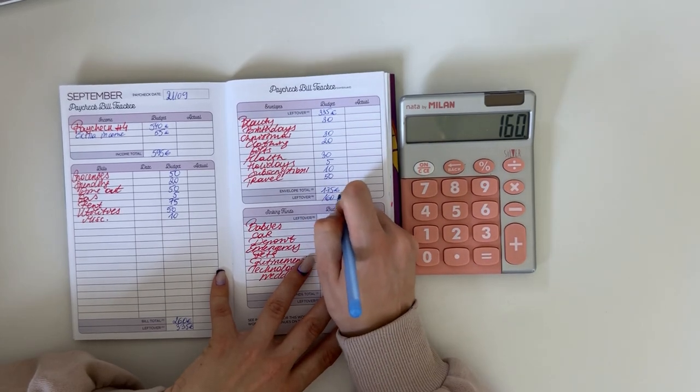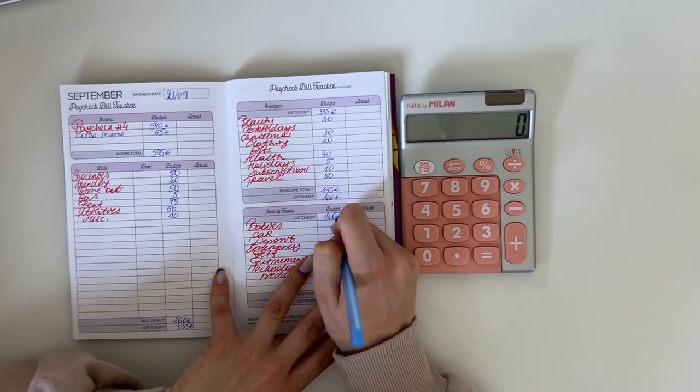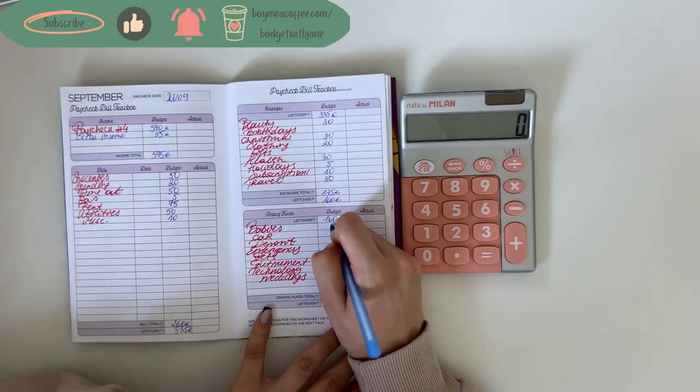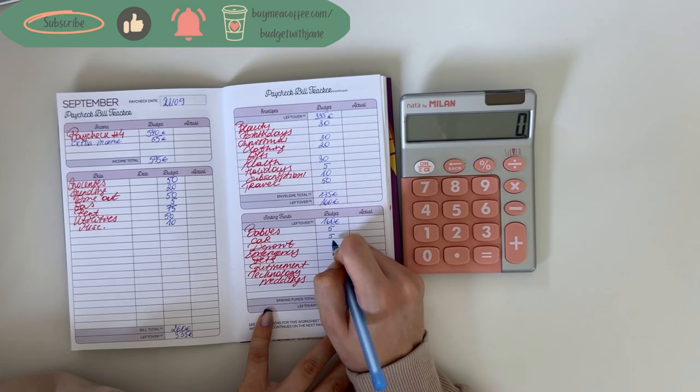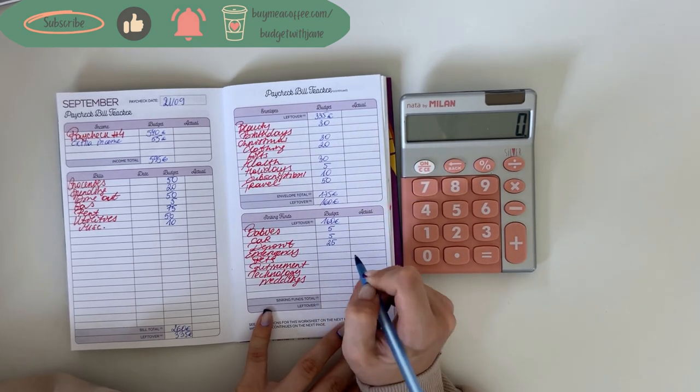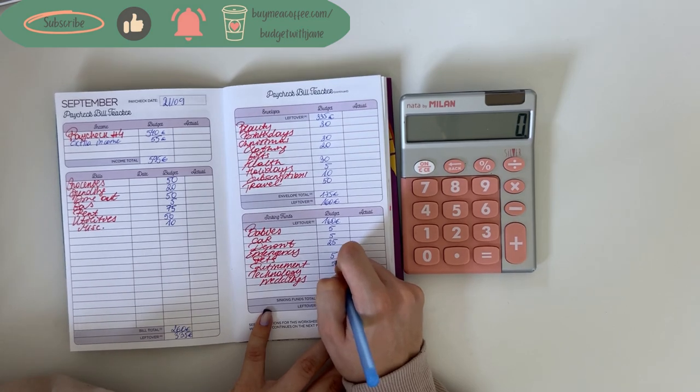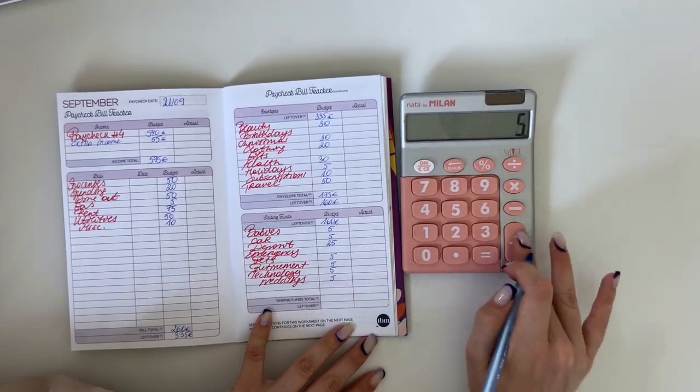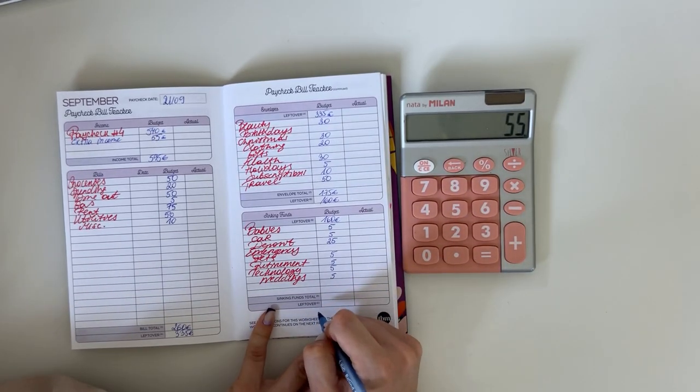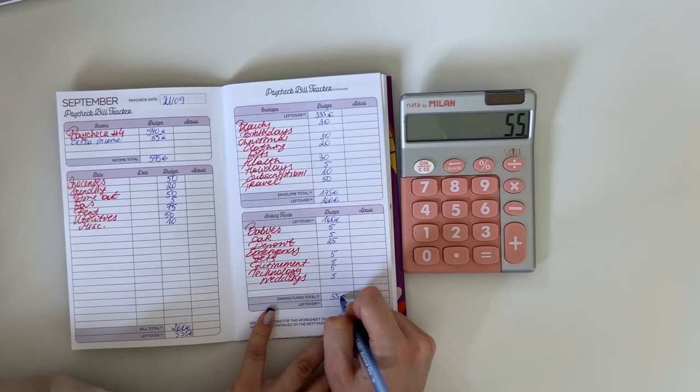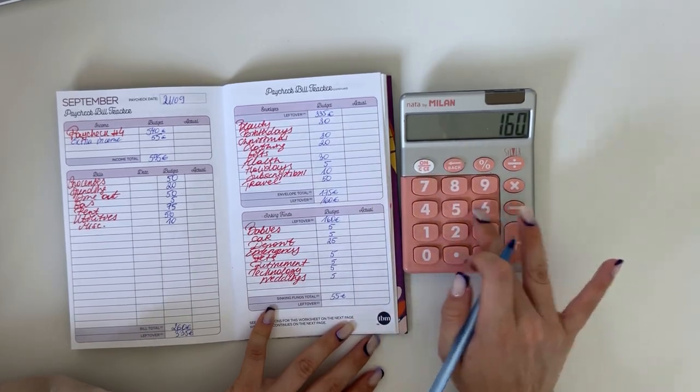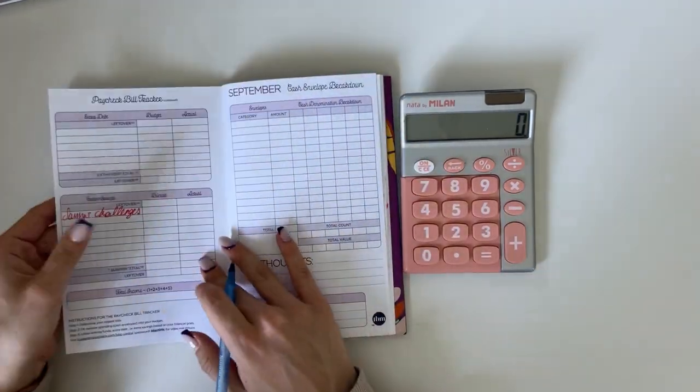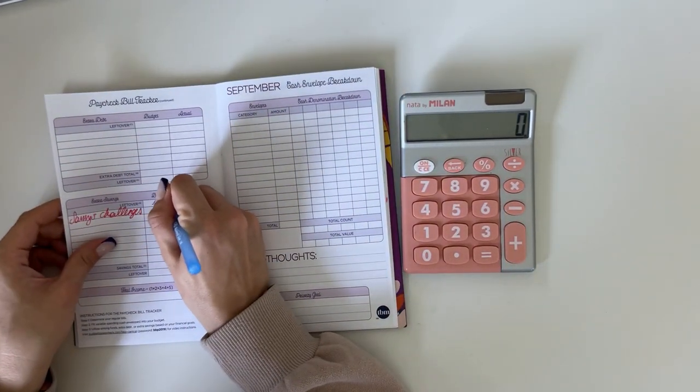We're bringing that 160 to long-term sinking funds and we're gonna put 5 in babies, 5 in car, we're gonna put 25 in deposit, 5 in pets, 5 in retirement, and 5 in technology and weddings each. In total that's going to be 55 euros. So 160 minus 55 is 105.